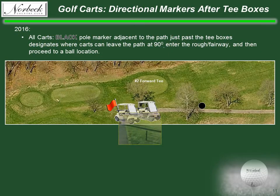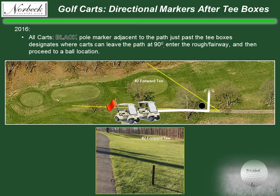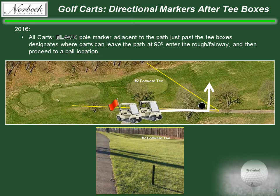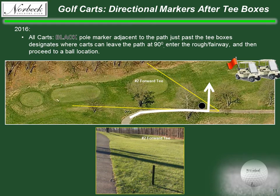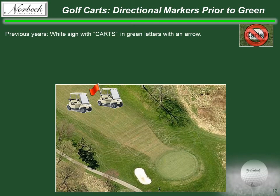New for 2016: for all motorized cart traffic, you will see a single black pole marker just past the tees next to the cart path. This black pole marker designates the earliest point that any carts can leave the path and enter the rough or fairway. Once you pass this black pole marker, you can leave the path at 90 degrees and proceed to your ball. Once you hit, play the hole by following the cart rules dictated for the day. There is also a change to cart directional markers short of the green — you will no longer see the white signs with green letters.